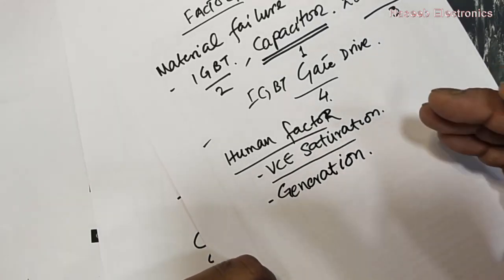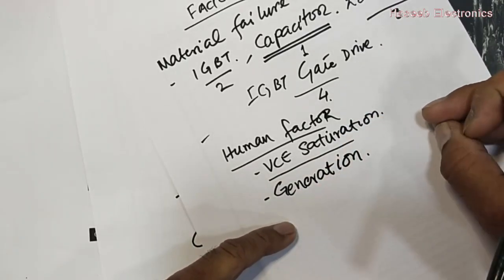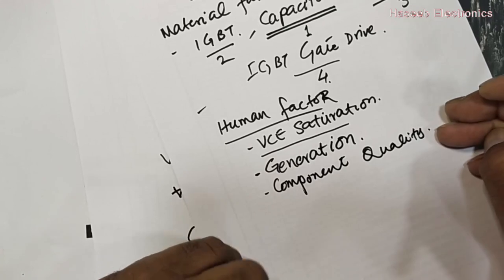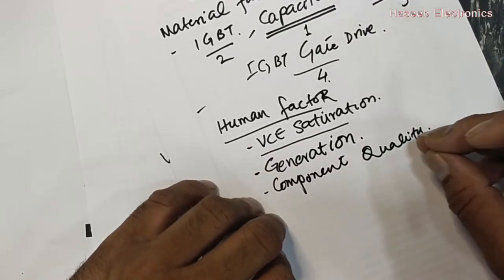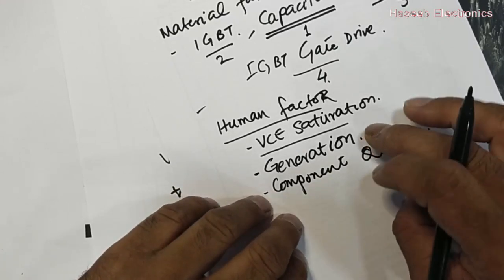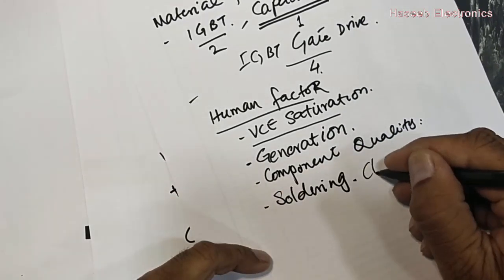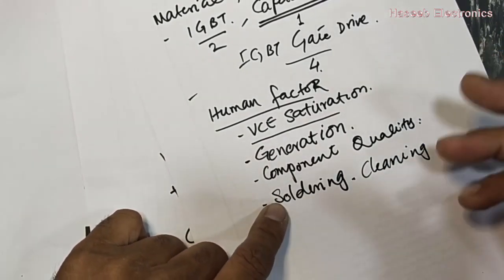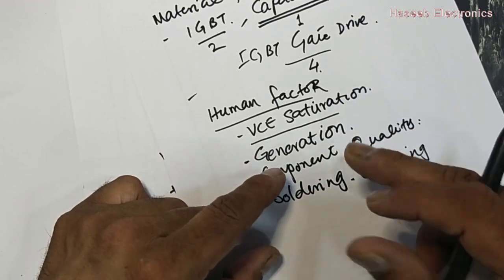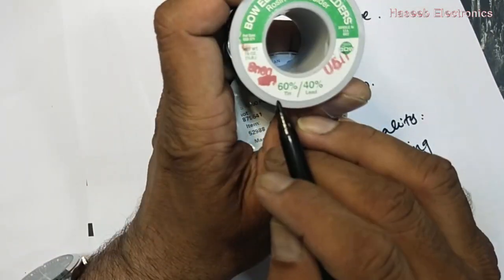Next is the IGBT generation — whether it is a French Stop or Field Stop type, we must match the technology used in the original part. Then there is component quality: where we purchase the component matters. Local vendors often select poor quality components. If we use a poor quality component, it will not meet the manufacturer's quality standard and material failure will occur again. Regarding soldering: since the IGBT is a high-current component, using a low-quality solder wire can also cause damage by increasing the track resistance.